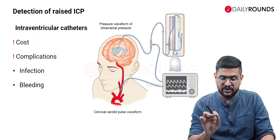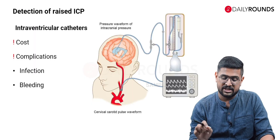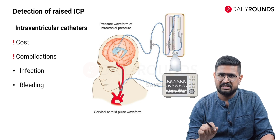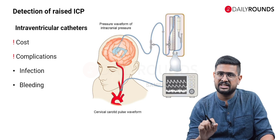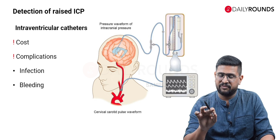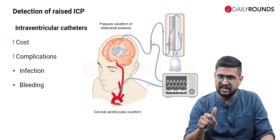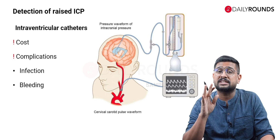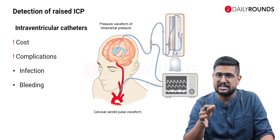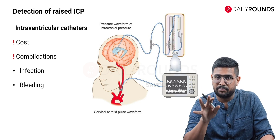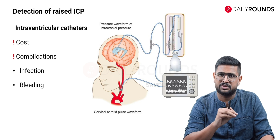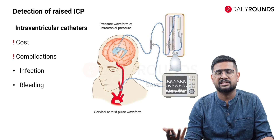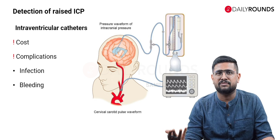The next modality mostly used in ICUs, and not much in emergency departments, is detection of raised ICP using intraventricular catheters. This procedure is a costly affair, and secondly, it is not free of complications.